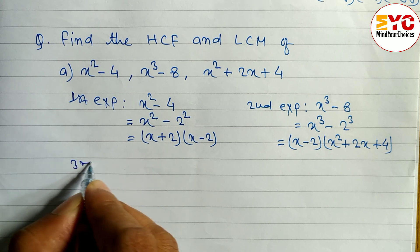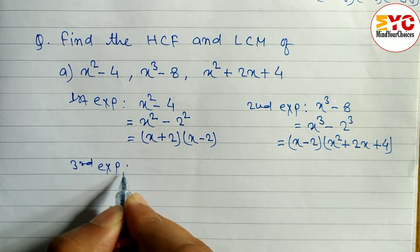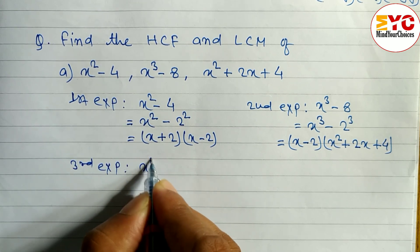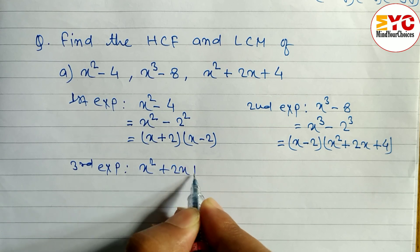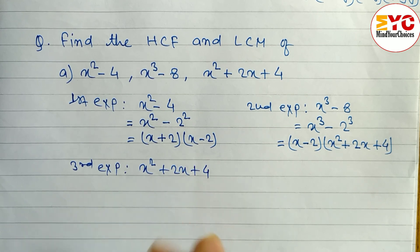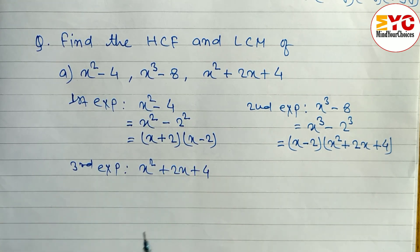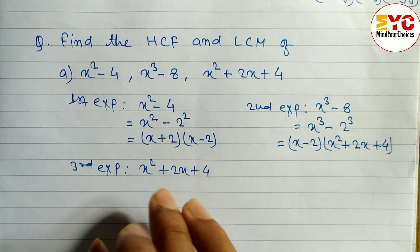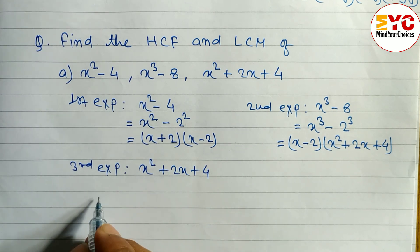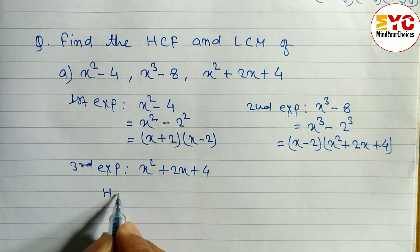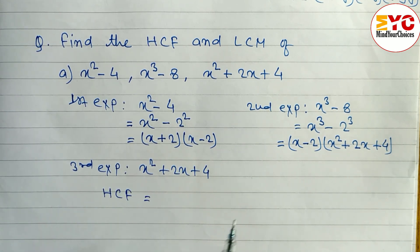The third expression is x² + 2x + 4. When we try to factorize it by finding two numbers that multiply to 4 and add to 2, it is not possible, so we cannot factorize this expression further.